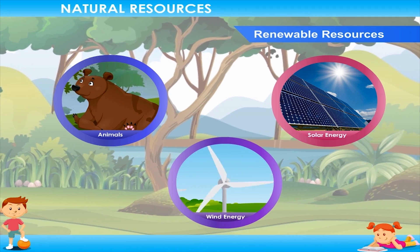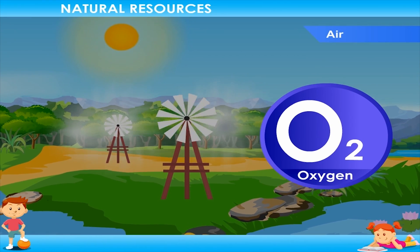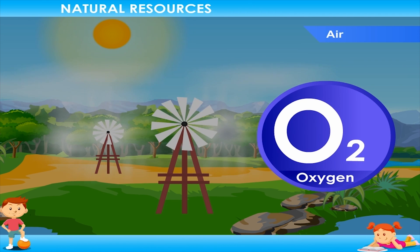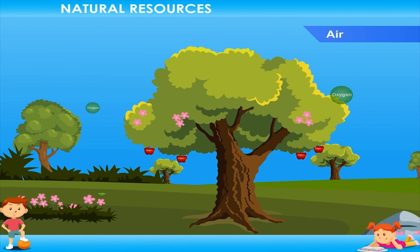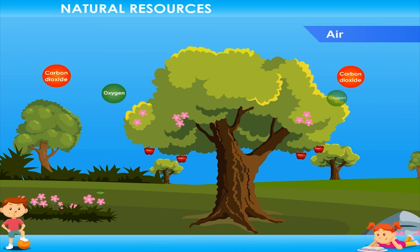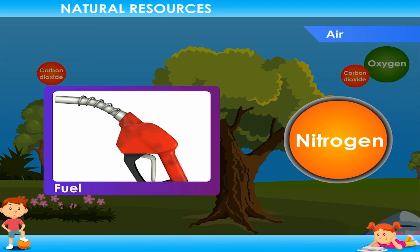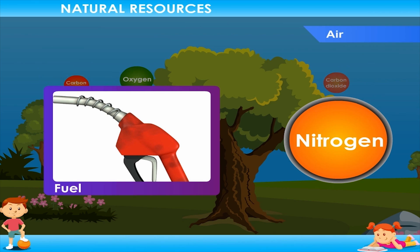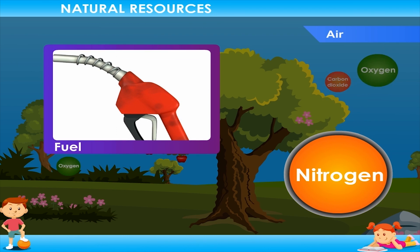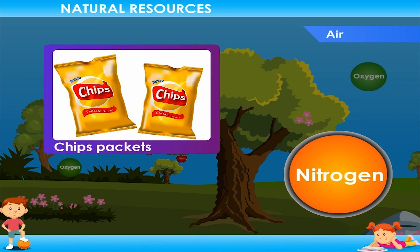Air: All living beings need oxygen for living and to breathe. We cannot survive in the absence of oxygen. Plants release oxygen and absorb carbon dioxide in the atmosphere. We use oxygen to burn fuels, and other gases like nitrogen, oxygen and some other gases in the air serve many useful purposes. For example, nitrogen is used to fill food packages and prevents food from spoiling.